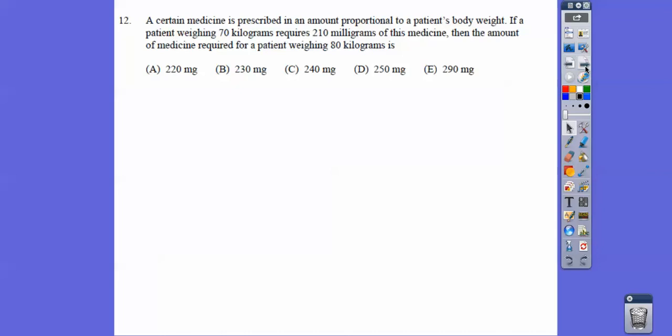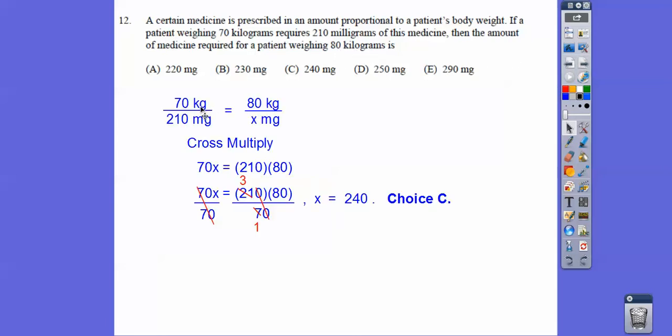A certain medicine is prescribed in the amount proportional to a patient's body weight. So this is where we do a proportion. A proportion is a fraction equals a fraction, and we can cross-multiply. So 70 kilograms over 210 milligrams in the amount of 80 kilograms with X milligrams. So as long as you're consistent, kilograms are on top and on top, and milligrams are on bottom and on bottom. Go ahead and cross-multiply and you get choice C on that. I'm going to stop here. I'll pick up with number 13 next. Take care.